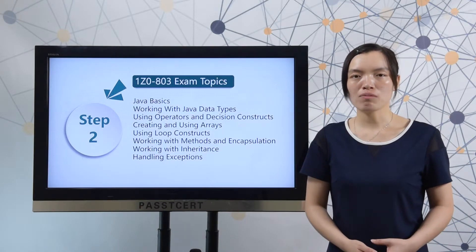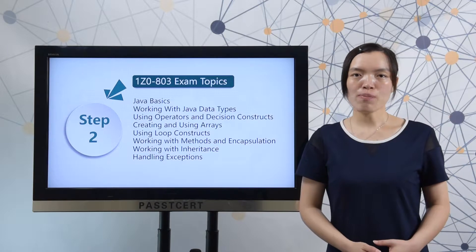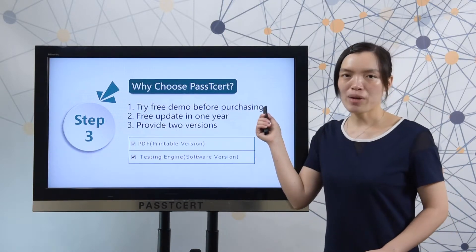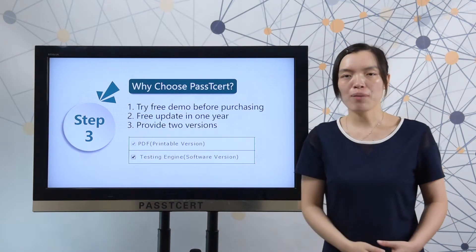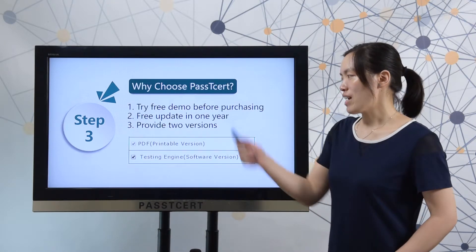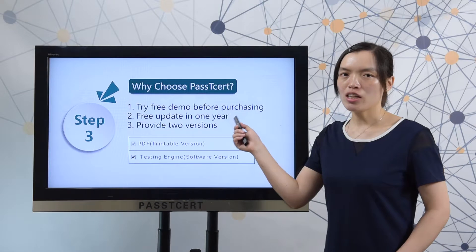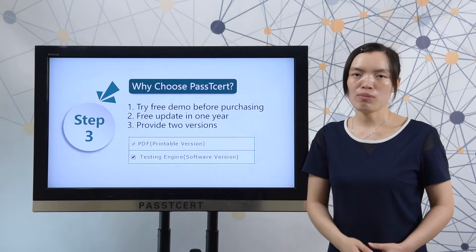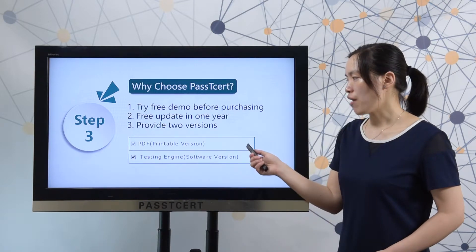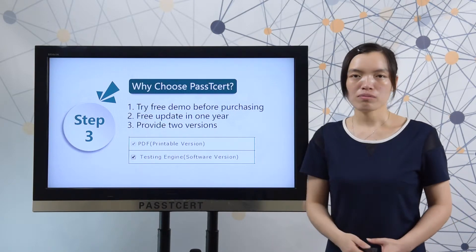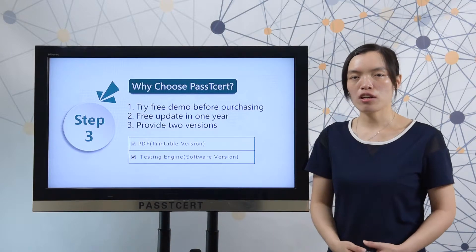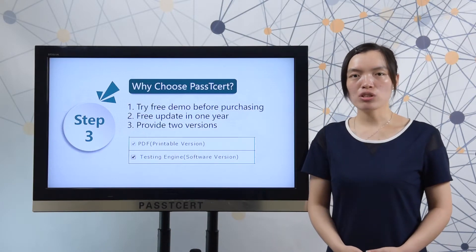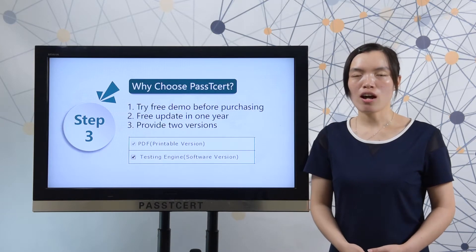Before you decide to take a test, you will search for material online. Let's view why choose Pass This All material. One, before you decide to make a purchase, you can try a free demo first. Two, Pass This All provides updates for one year. Three, Pass This All provides two versions: PDF and software. The PDF version is convenient for you to read and study. You can print it out to read all the questions and answers anywhere.